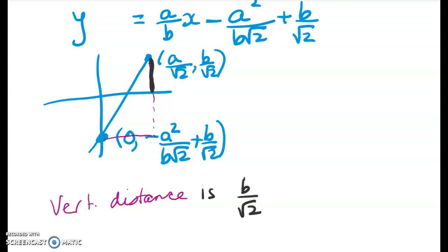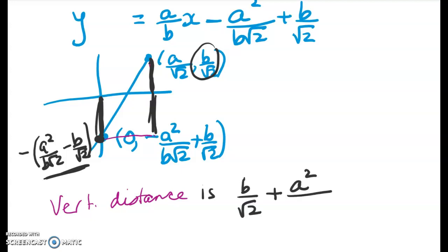Then the vertical distance is b on root 2. Well, we can do it mechanically. Or we can just look at it and say, well, this bit is the b on root 2 part. And this bit down here is a negative number. So this is negative a squared on b root 2 minus b on root 2. So that distance there, which is this distance here, is just the modulus of this. So it's b on root 2, or the positive part of it, right? b on root 2 plus a squared on b root 2 minus b on root 2.